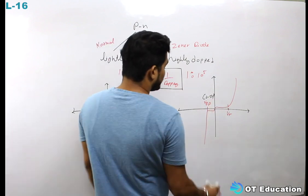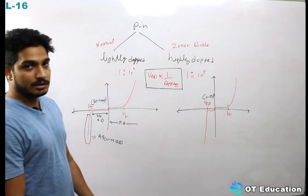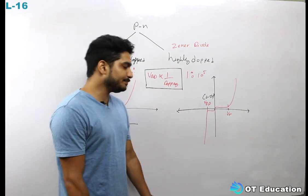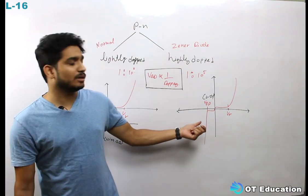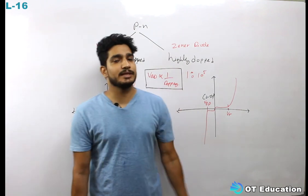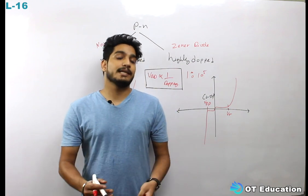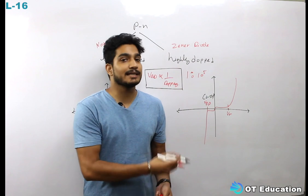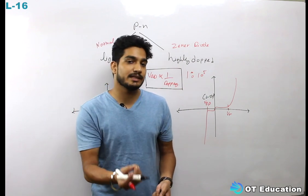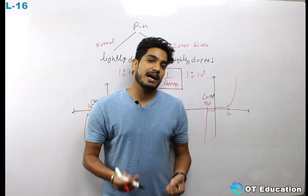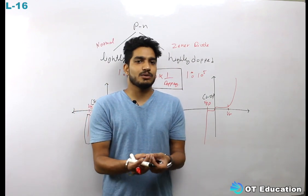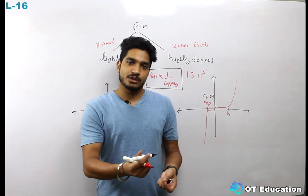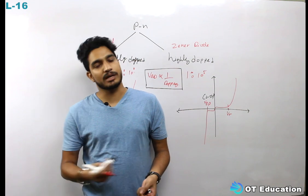These are my Zener diode characteristics, and these are normal diode characteristics. The Zener diode and normal diode characteristics are approximately similar; the difference is in the reverse-bias characteristics. Because Zener diode is highly doped, its reverse breakdown voltage is reduced to 2 to 5 volts, so Zener diode can be used in the reverse bias region to conduct.